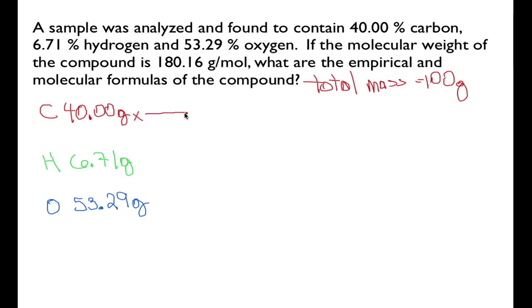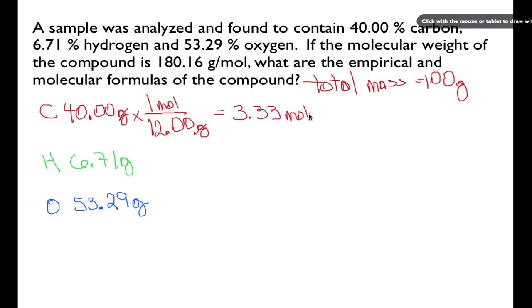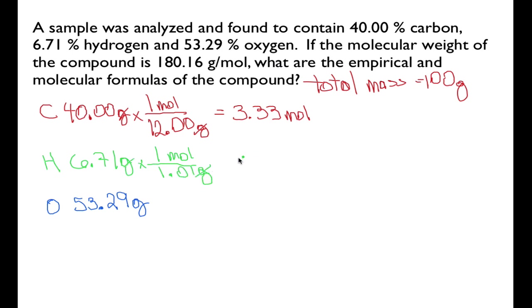For carbon, we know the molar mass — one mole of carbon is 12 grams. The grams cancel, and we find that we have 3.33 moles of carbon. We can do the same thing for hydrogen. We have to convert from grams to moles, since we want to compare the number of atoms of each element. One mole of hydrogen is 1.01 grams, so the grams cancel and we find that we have 6.64 moles of hydrogen.